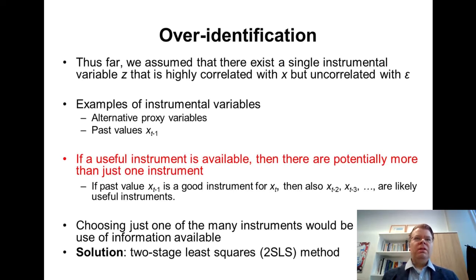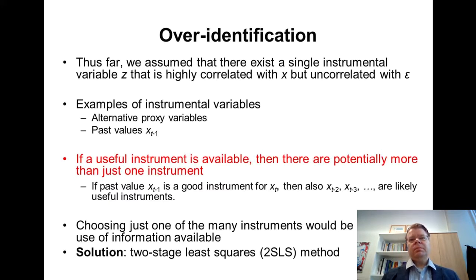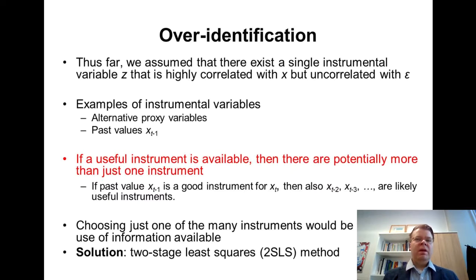We discussed that there could be alternative measurements or alternative proxy variables that could be used as instruments when we have the measurement errors problem, or we could use some past values in the panel data setting. If we are searching for good instruments, it might be the case that we find more instruments than would actually be needed. If we have many instruments, it would be inefficient to just randomly discard some of them.